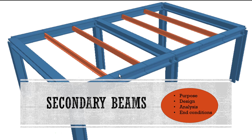The primary importance of secondary beams used in a structural system is to transfer roof loads to the supporting beams, called primary beams. Secondary beams take the loads and transfer them to the primary beams, which are the main beams.